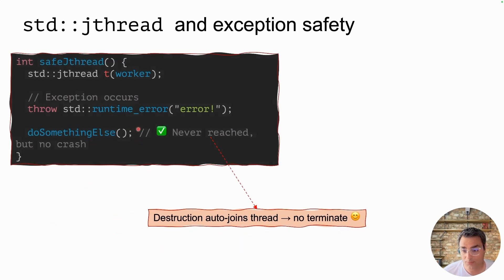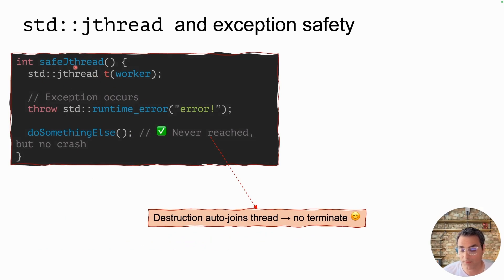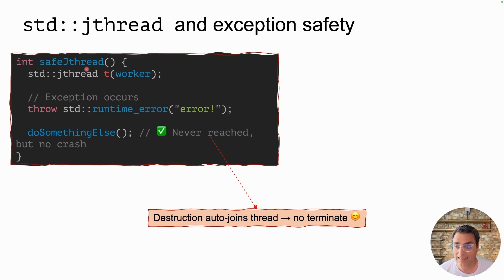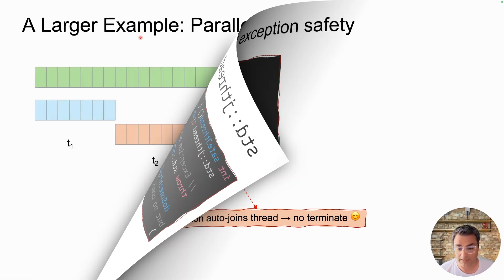Let's go back to the exception problem. If you define your thread as a jthread, even if an exception happens and we exit from this function, t gets destructed and join is now called automatically. So std::terminate is not called, and if you handle this exception outside, your program can keep running.